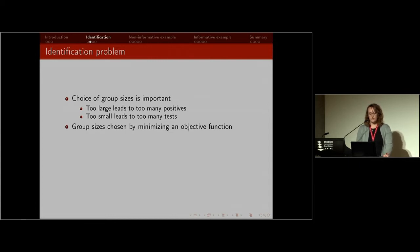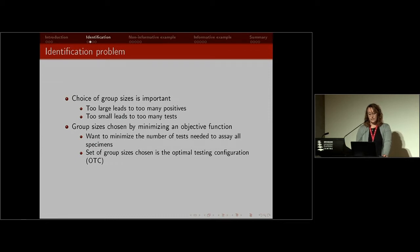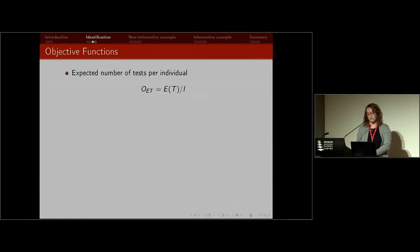The group sizes can be chosen by minimizing an objective function. This is an optimization problem where we look at all possible group sizes that are reasonable for a laboratory and minimize a given objective function. Generally we want to minimize the number of tests because laboratory costs are usually directly proportional to the number of assays. The set of group sizes chosen as optimal is what we call the optimal testing configuration. The first and most common objective function is the expected number of tests per individual.